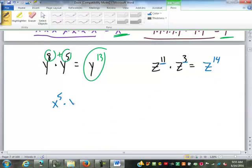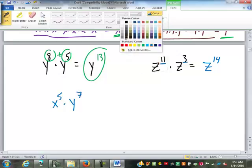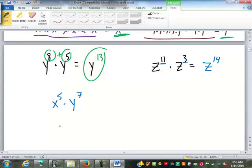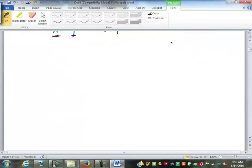I'll have you do z to the eleventh times z to the third. We get z to the fourteenth. Good. Eleven plus three is fourteenth. So z to the fourteenth. x to the fifth times y to the seventh. What do you get? Careful. Notice, up here, all of these had the same base, didn't they? I can only combine the powers like that if I have the same base. These do not. So this is literally just x to the fifth y to the seventh. The only thing I can do is take out the multiplication symbol.